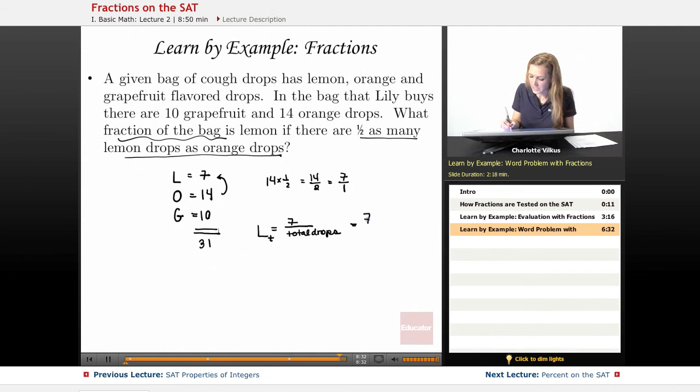So my fraction is then going to be 7 over 31. And 7 here is already a prime number. So I know that I can't actually simplify this any further. And this will be my final answer.